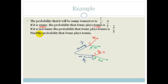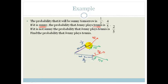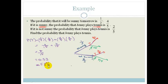It asks us to find the probability that Jenny plays tennis. There are two ways to get to her playing tennis: sunny then she plays, or not sunny then she plays. So the probability that she plays tennis is one third times four fifths, plus two thirds times two fifths. That becomes four over fifteen plus four over fifteen, which is eight over fifteen, equal to 0.53 — approximately a 53% chance that Jenny is going to play tennis tomorrow.